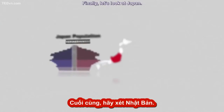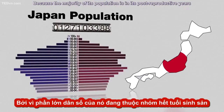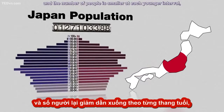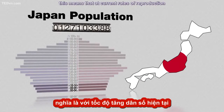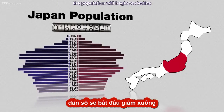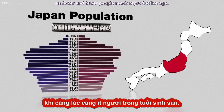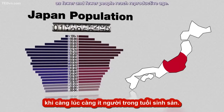Finally, let's look at Japan. Because the majority of its population is in its post-reproductive years, and the number of people is smaller at each younger interval, this means that at current rates of reproduction, the population will begin to decline as fewer and fewer people reach reproductive age.